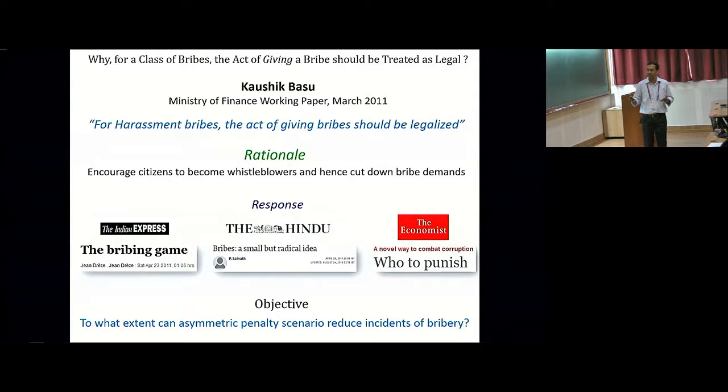It generated a lot of controversy, and there were opinions from both the left and the right. But surprisingly, when we looked at the literature, we found that there was very little quantitative work to back up this hypothesis. So we wanted to understand whether it is indeed true that an asymmetric penalty scenario that Basu proposed, where the bribe giver is not penalized whereas the bribe taker is penalized, does reduce the incidence of harassment bribery.